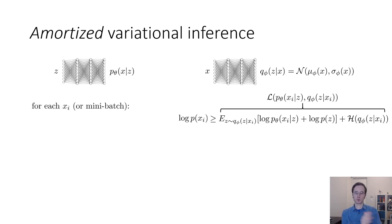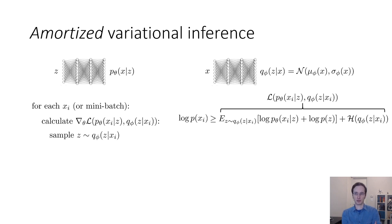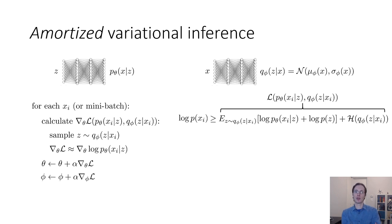Our training procedure is a modification of the one from before. First, calculate the gradient of the variational lower bound with respect to theta: sample Z from Q_phi of Z given X_i, then calculate the gradient with respect to theta approximated by the gradient of log P_theta of X_i given Z, and do a gradient ascent step on theta. Then you also need to take a gradient step on phi, also doing gradient ascent on the variational lower bound L. The key question we need to answer is: how do we calculate the gradient with respect to phi of L?